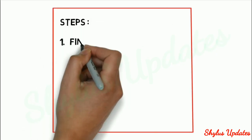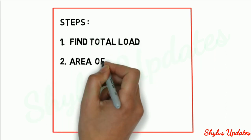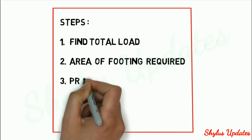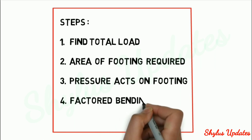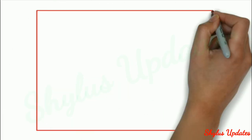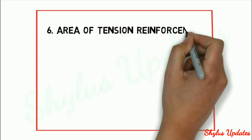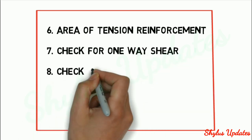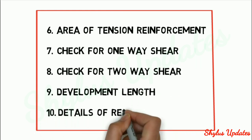What are all the steps required? Find total load, area of footing required, pressure acts on footing, factored bending moment, effective depth, area of tension reinforcement, check for one-way shear, check for two-way shear, development length, and details of reinforcement.